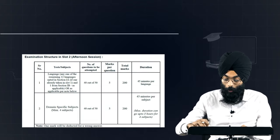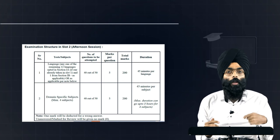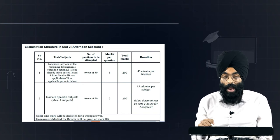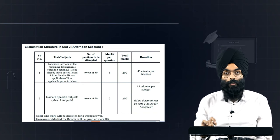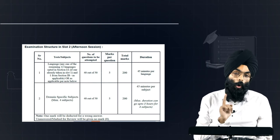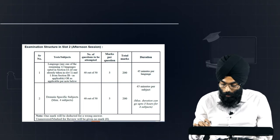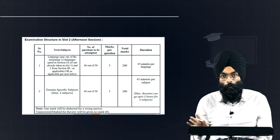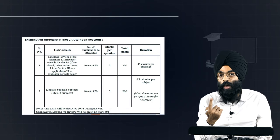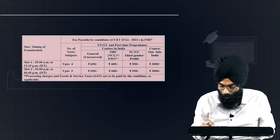In Slot 2, if you have studied two languages — say English and Hindi — and want to take an additional language to increase your chances of admission, you can take that second language from the other 20 languages in Slot 2. You can also take remaining domain-specific subjects: if you took accountancy and business studies in Slot 1, you can take economics, maths, or physical education in Slot 2. Again, 40 questions to be attempted out of 50, with total marks of 200 at 5 marks each, with negative marking of minus 1.